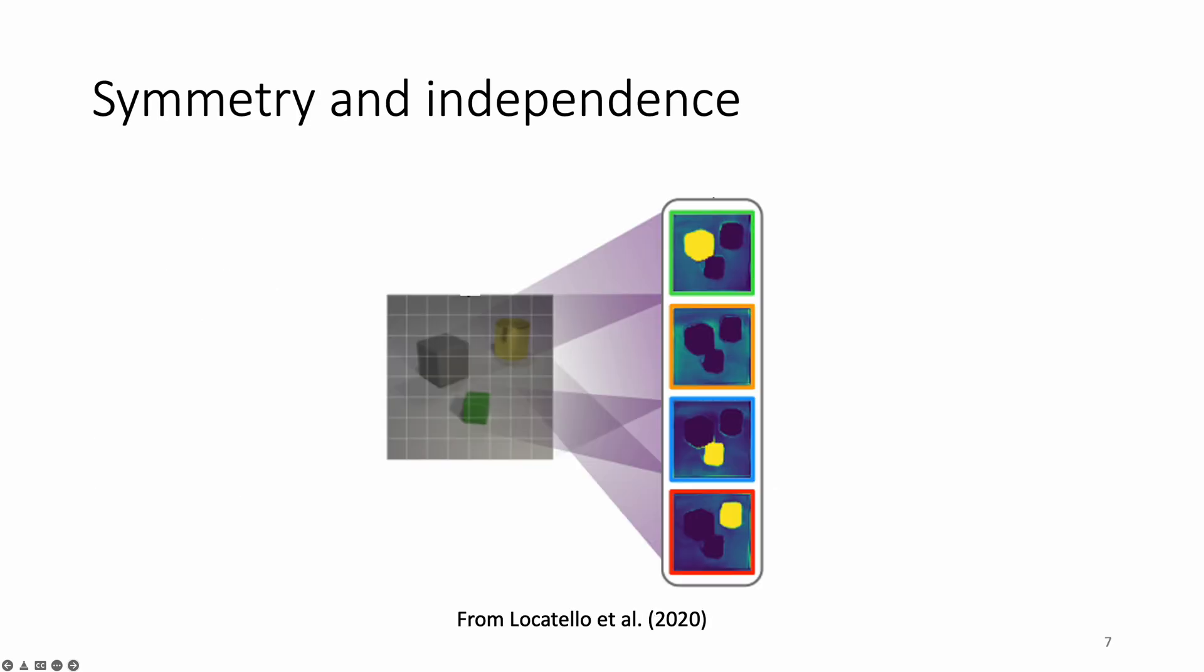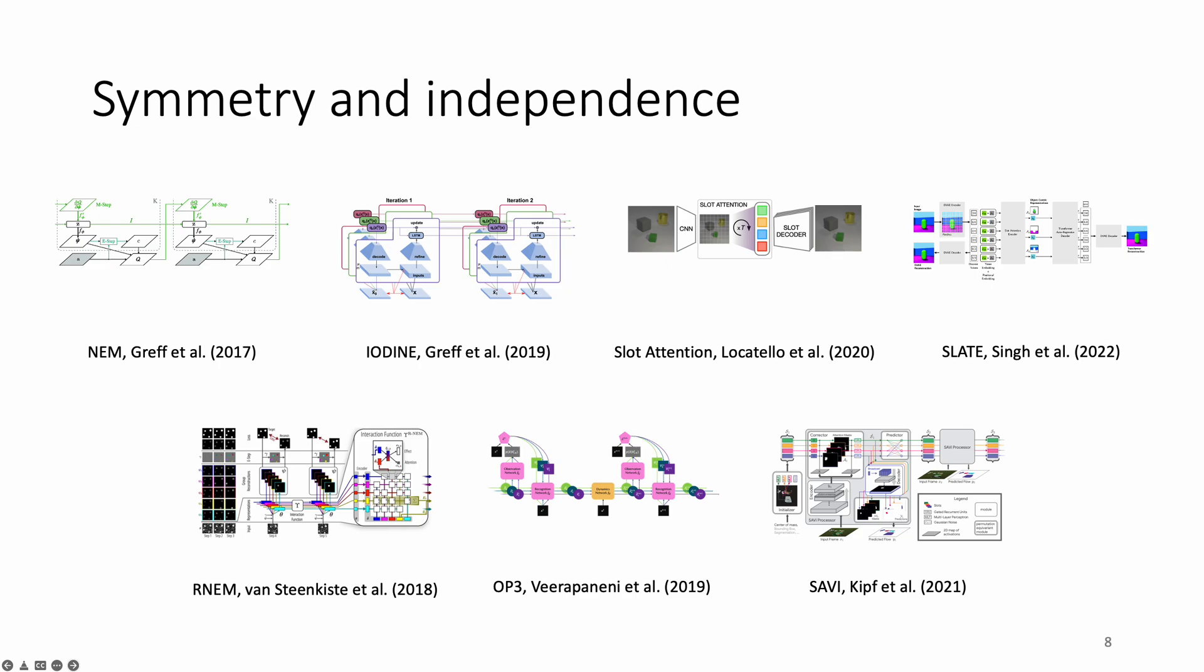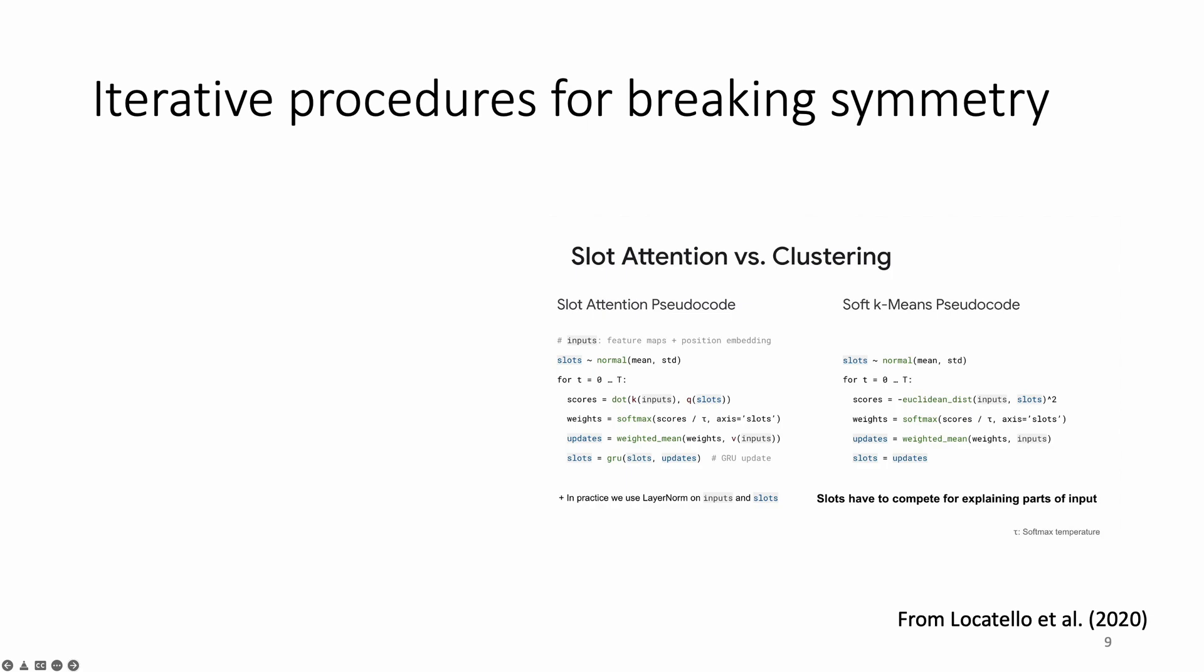Mixture models offer an elegant way for satisfying the properties of symmetry and independence because the generative process for standard mixture models treats mixture components as both symmetric and independent. This motivates modeling each sensor measurement, such as a pixel, as having been generated by a mixture model where there is a mixture component for each object. This is the general approach taken by a large body of work in object-centric modeling. But if we want to infer from observation such a set of representations that are a priori symmetric and independent, then we also need a mechanism for breaking symmetry when we perform inference to assign the different representations to different parts of the scene. The way to do this for inference in mixture models is to break the symmetry with a random initial guess that iteratively gets refined, as in standard clustering with expectation maximization.